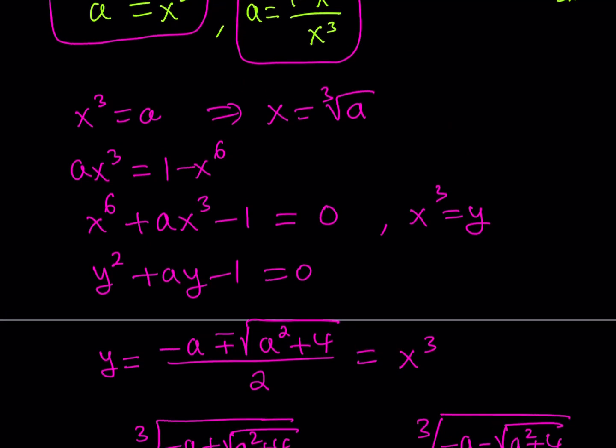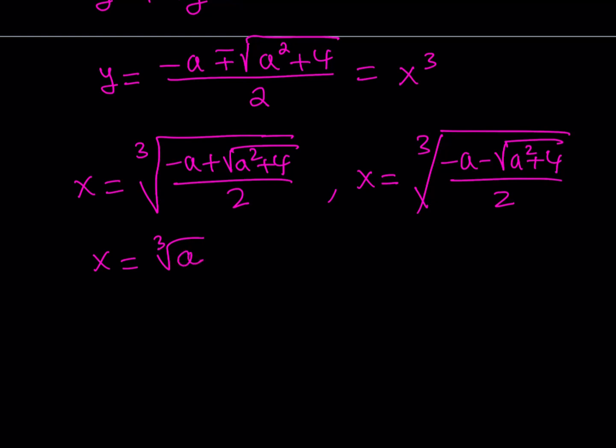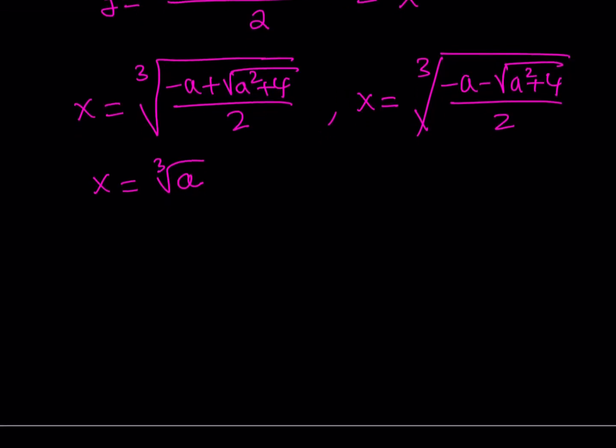So I have three solutions. The third one is x equals the cube root of a. That makes sense because even though this is a nonic equation, it can be turned into a cubic, and a cubic equation is supposed to have three solutions. Now these are still in terms of a, which is not final — we still have to back-substitute, remembering that a equals the square root of 2021.